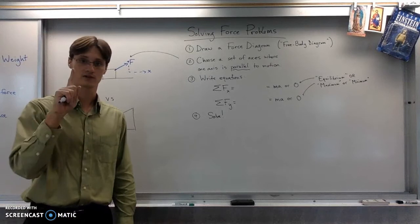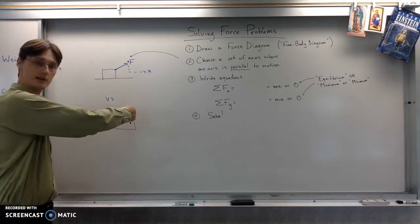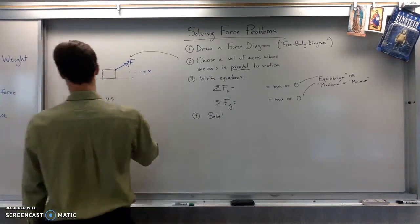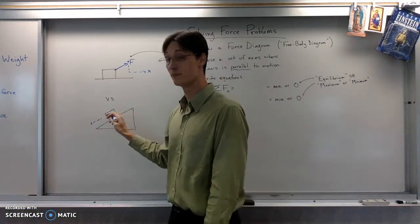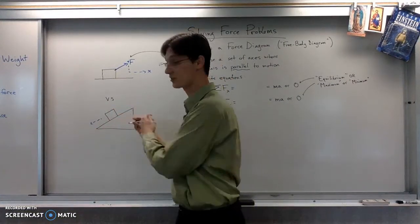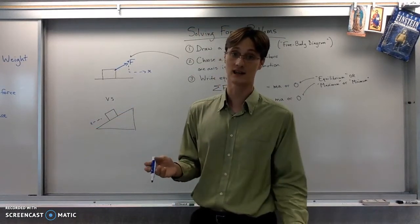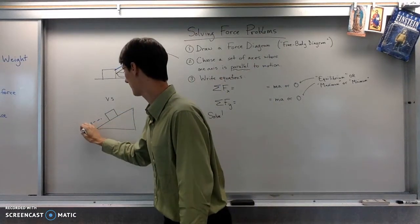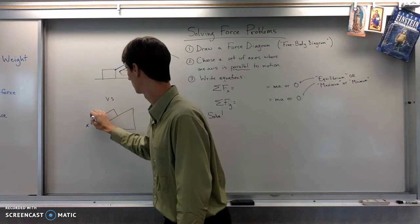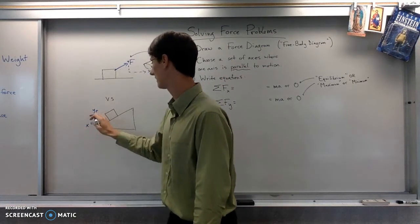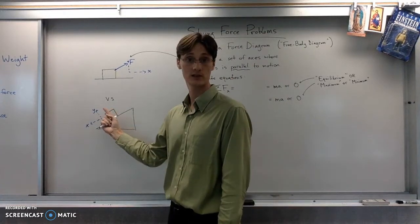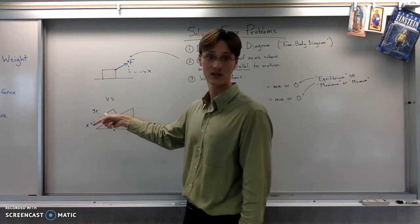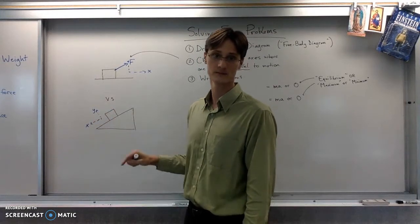Instead of just one, which is like that. So it makes much more sense for this sort of question with an inclined plane to pick a set of axes that go like that and that. Where y is going to be perpendicular to the surface and x is going to be parallel to the surface.